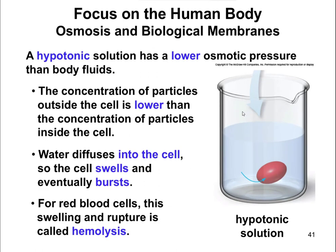A hypotonic solution — the prefix hypo means low — so it means it's going to have a lower osmotic pressure than body fluids. That means the solution outside is going to have a lower amount of solute than inside the cell. So pretend a hypotonic solution would be plain water. Inside the cell, there's going to be water, proteins, DNA, ions — a whole lot of other stuff in there.